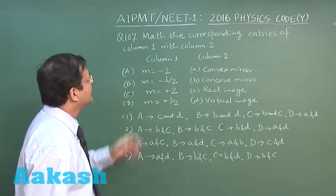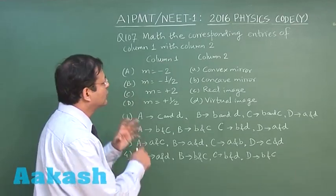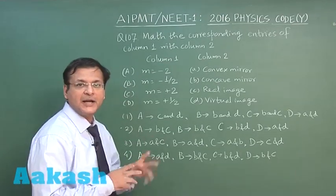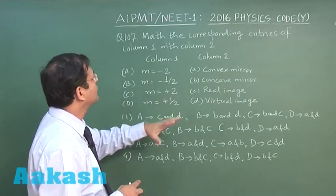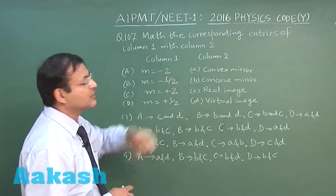This question 107 is related to ray optics and the concept of mirror and the value of magnification. You are supposed to match column 1 with column 2, match the corresponding entries of column 1 with column 2.